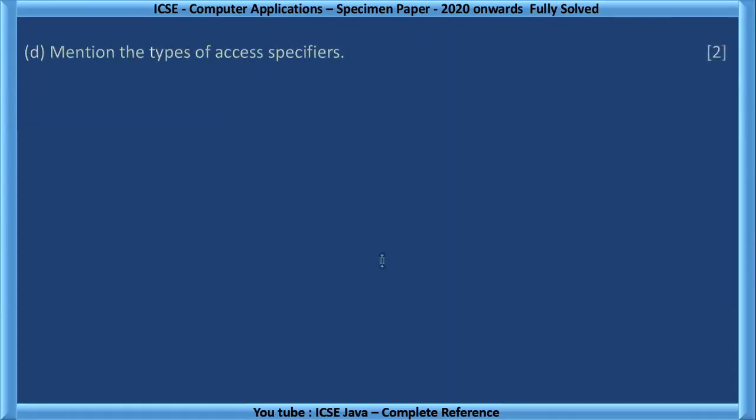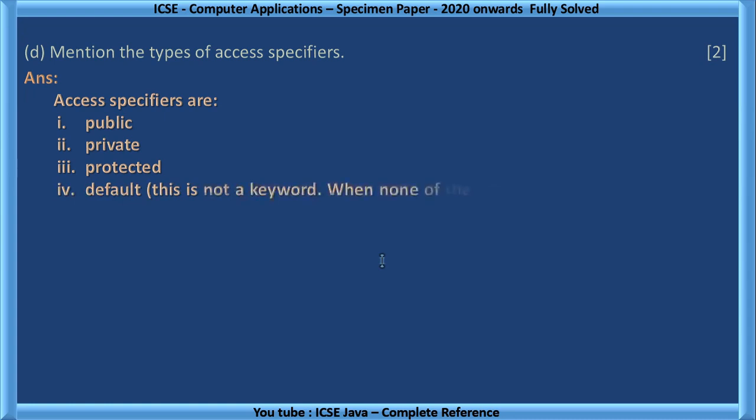D, mention the types of access specifiers. Access specifiers are public, private and protected. There is one more, we call it as default. This is not a keyword. When none of the above is mentioned, it is called default. If you write default, you must indicate that it is not a keyword.